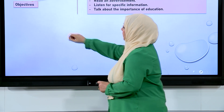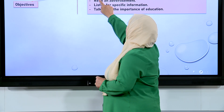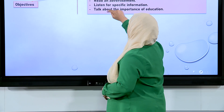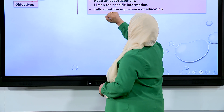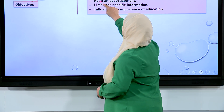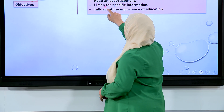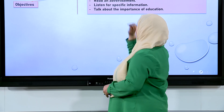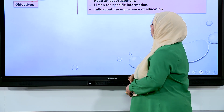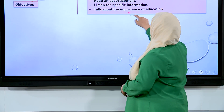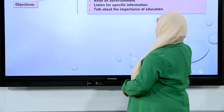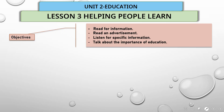Now we have our lesson objectives. First, read for information. Second, read an advertisement. Third, listen for specific information. Fourth, talk about the importance of education.